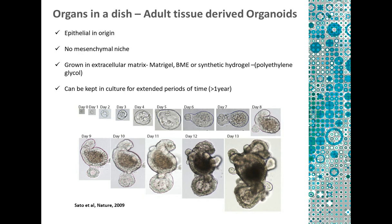The adult tissue-derived organoids are mostly epithelial in origin. They do not have any mesenchymal niche, and they are grown in an extracellular matrix, which provides them with a lot of factors to help them grow. This can be either matrigel, the basement membrane extract, or recently we have also used a synthetic hydrogel, which is essentially polyethylene glycol. Both matrigel and BME are not very well defined, because they are isolated from the sarcoma cells of mice. A synthetic hydrogel, which is more defined in its characteristics, makes for more defined studies. These organoids can also be kept in culture for extended periods — most of them have been grown for more than a year — and they maintain all their genetic structure as well as their functions.